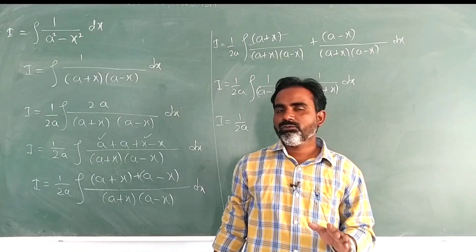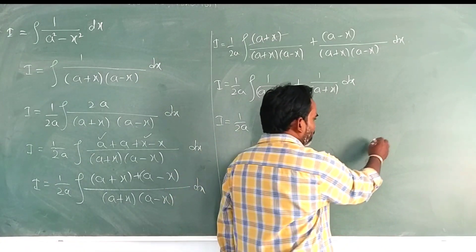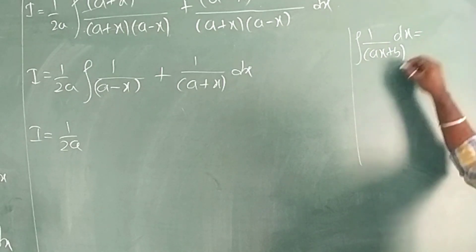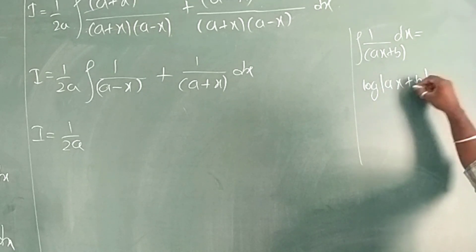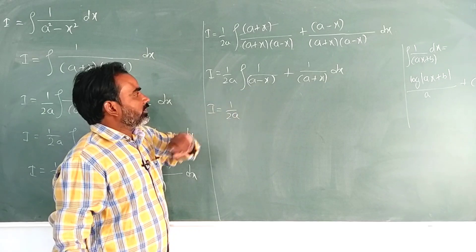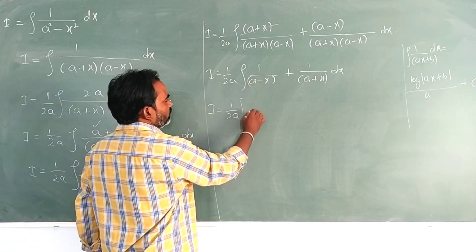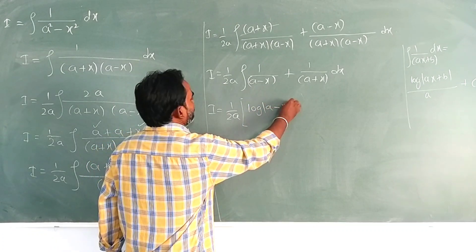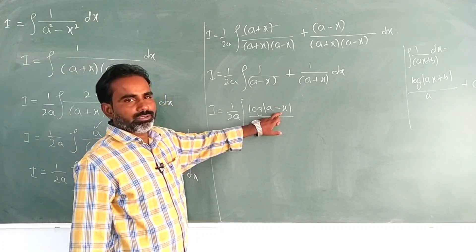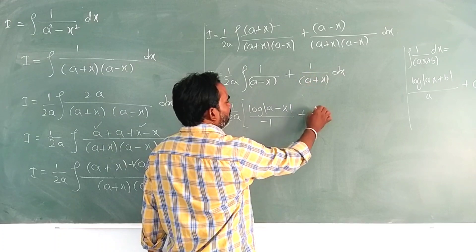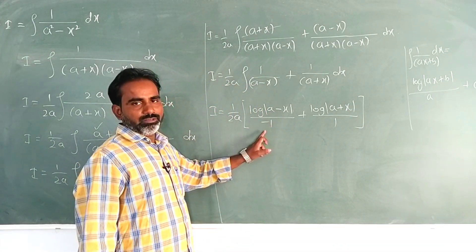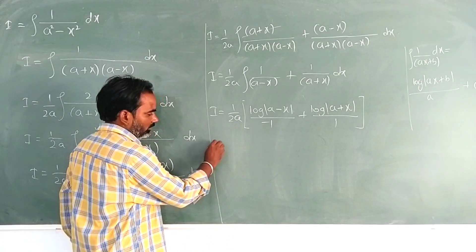Now I equals 1 divided by 2a, integration. What is the integration of 1 by x? It is log x — you know the basic formula. Integration of 1 divided by (ax plus b) with respect to x is log of (ax plus b) divided by the coefficient of x.